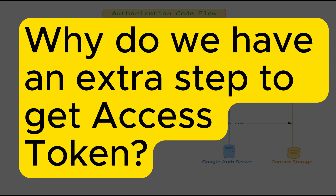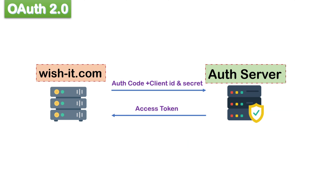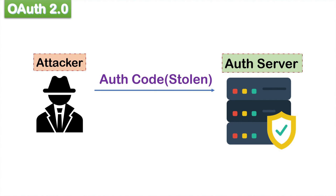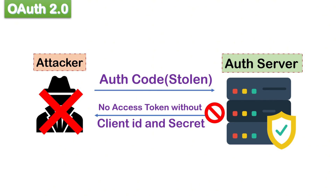You might be thinking: why do we have this extra trip to get an access token when we already have the authorization code? This extra step is added to make sure that only a valid third-party application is trying to access the user data, because the third-party application needs to send their client ID and secret along with the authorization code to get a valid access token. This verifies that the request comes from a legitimate client. If an attacker somehow intercepts the authorization code — which is possible during user browser interactions — they couldn't use it directly because they wouldn't have the client's credentials. Without the client ID and secret, they cannot exchange the authorization code for an access token, reducing the risk of attacks such as man-in-the-middle or code interception.